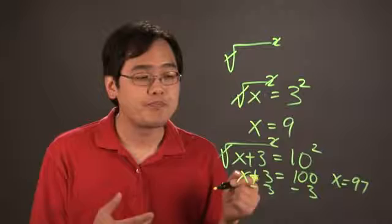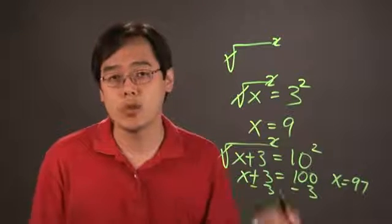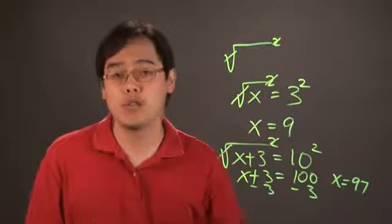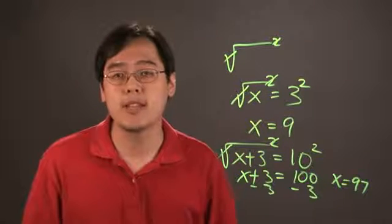But the bottom line is when you're canceling a square root, you have to square it, but because more often than not you'll be doing it in equations, you have to do it to both sides of the equation. I'm Jimmy Chang, and that's how to cancel a square root.